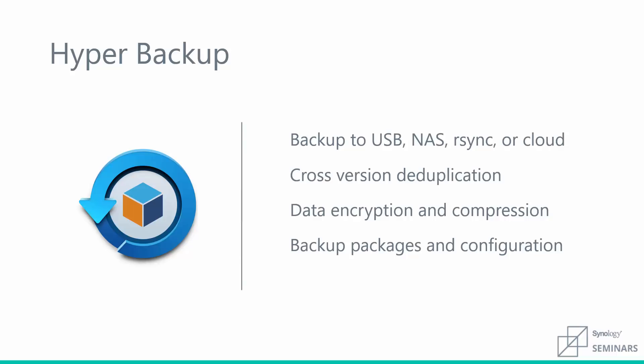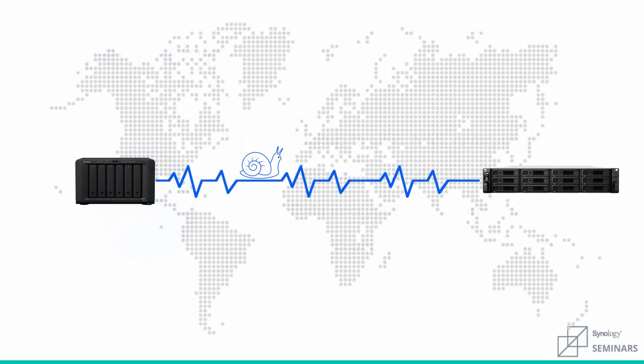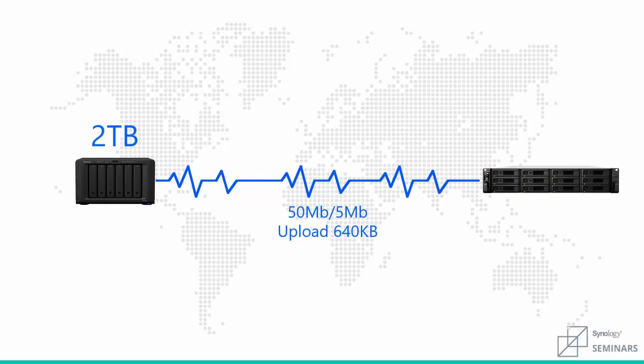The key distinction: with snapshot replication you have an exact copy of your data that's instantly accessible in the event of a disaster. Hyper Backup is a more traditional piece of backup software with many options for how you'd like to back your data up. These two pieces of software share one distinguishing feature — they're both going to be backing up over the internet, meaning your internet service provider is going to be the bottleneck in sending backups to that off-site location.